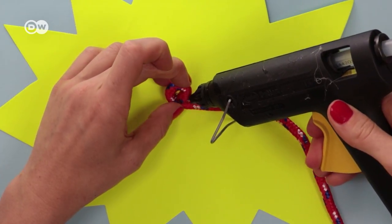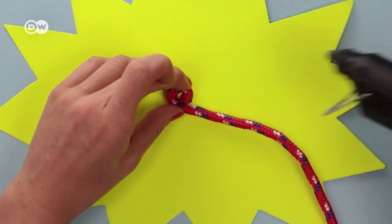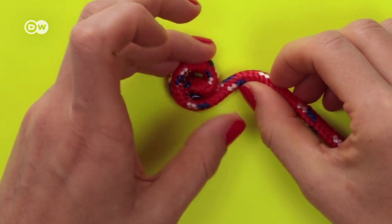Apply glue to the cord again and roll it further in. Wait a few moments and let the whole thing dry.